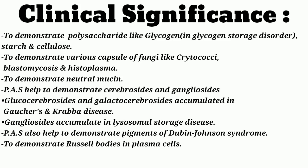Clinical significance of PAS stain: PAS stain is mainly used to demonstrate polysaccharides — glycogen and glycogen storage disorders, starch and cellulose. It is used to demonstrate various capsules of fungi like Cryptococcus, Blastomycosis, and Histoplasma. PAS stain is also helpful to demonstrate neutral mucin, cerebrosides, and gangliosides.